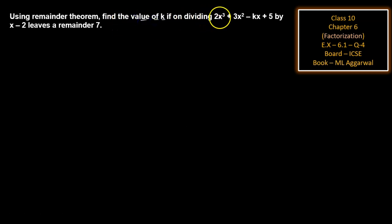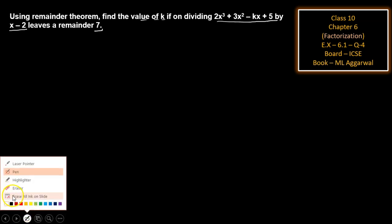If on dividing 2x³ + 3x² - kx + 5 by x - 2 leaves a remainder of 7. First of all, we need to understand what the remainder theorem is.